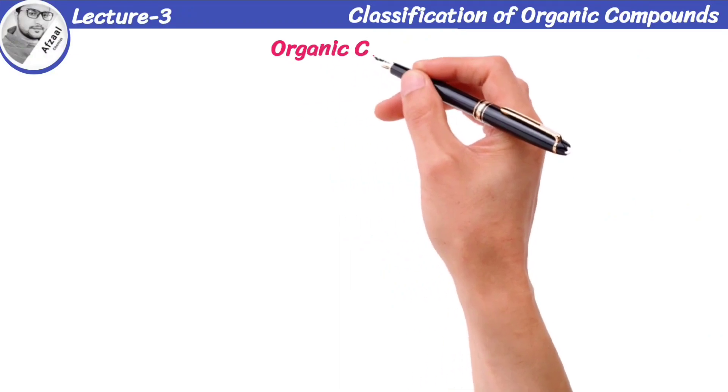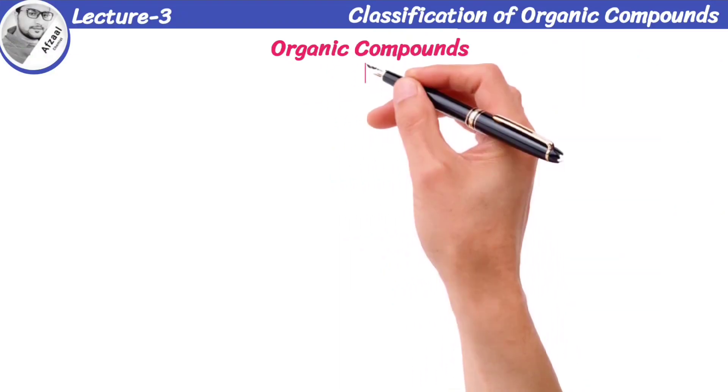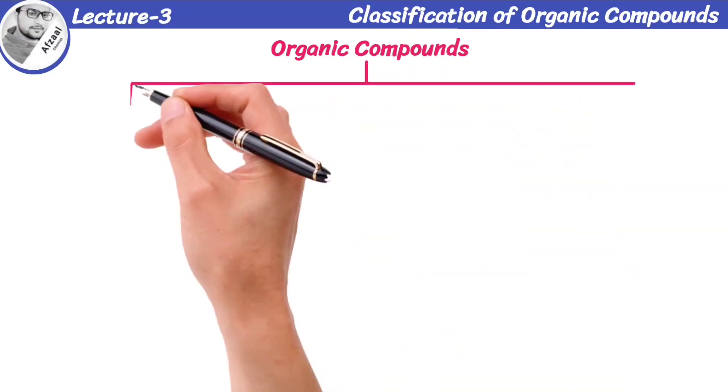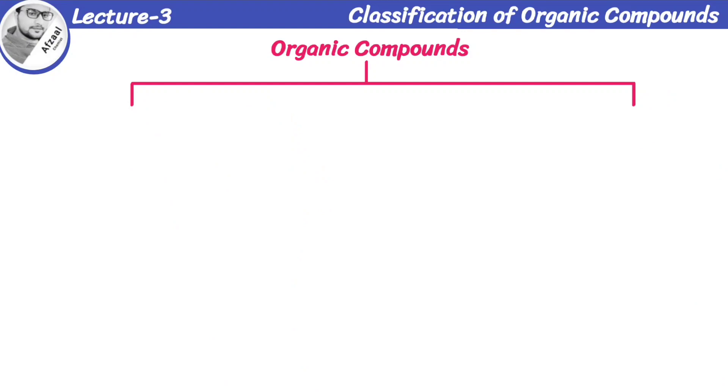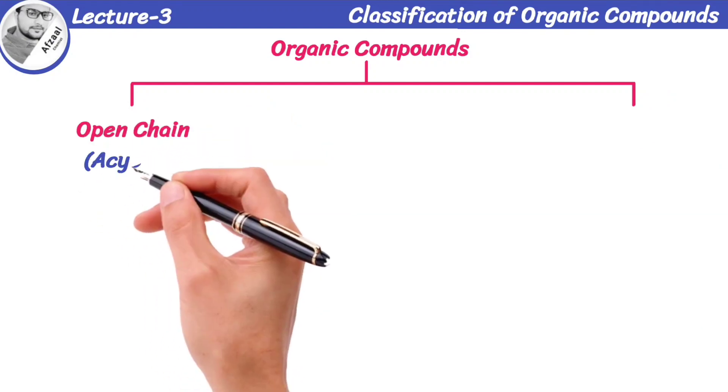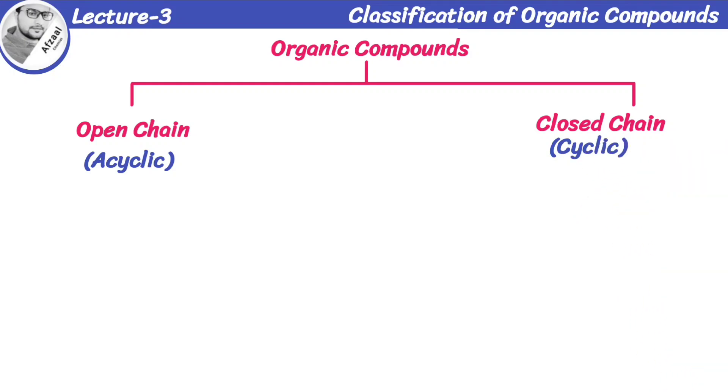All the known organic compounds have been broadly divided into two categories, depending upon their carbon skeleton. These are open-chain or acyclic compounds, and closed-chain or cyclic compounds.